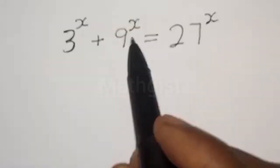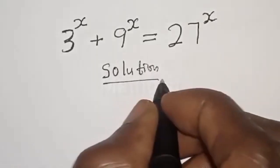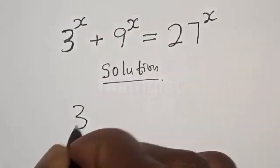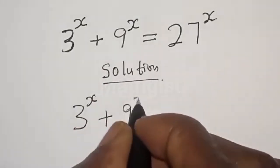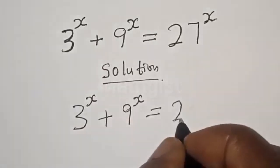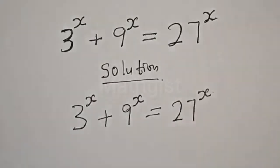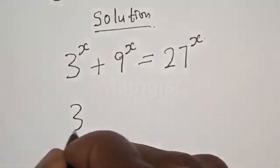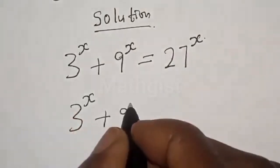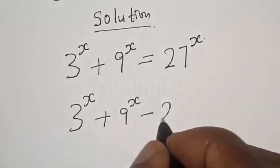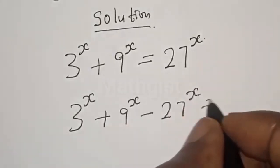We have the given equation: 3 raised to power s plus 9 raised to power s is equal to 27 raised to power s. Rearranging, we have 3 raised to power s plus 9 raised to power s minus 27 raised to power s is equal to 0.